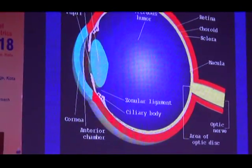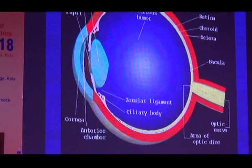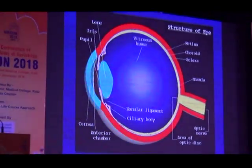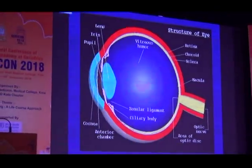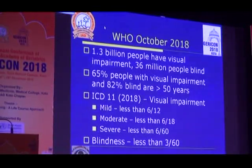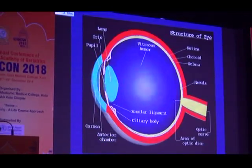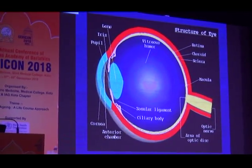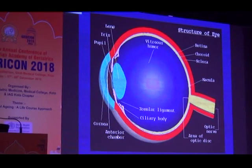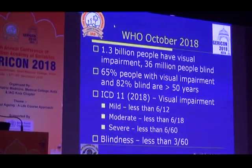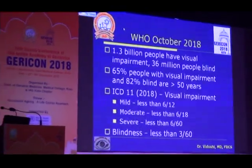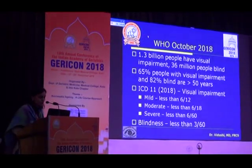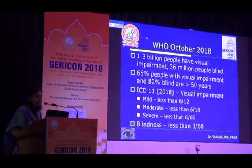Generally we have had a thinking till now that anything that is anterior is generally diseases of the developing world — they have better treatments and cheaper treatments — but anything that is posterior is more costly and has slightly poorer prognosis. So before we talk about blindness: what is blindness, what is the magnitude, and why is it important for the geriatric population?